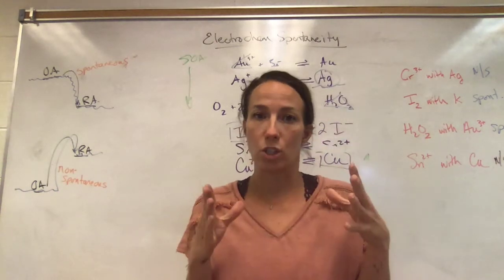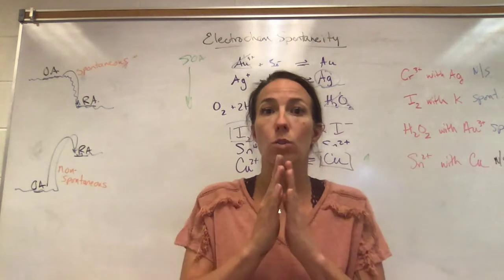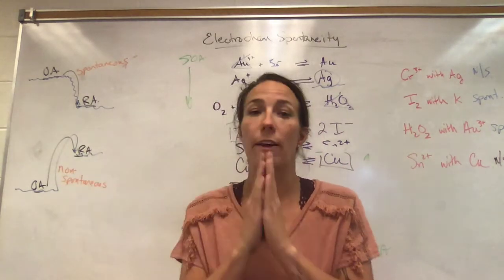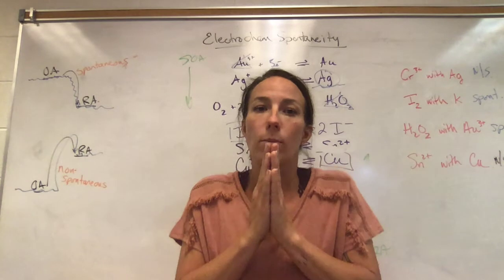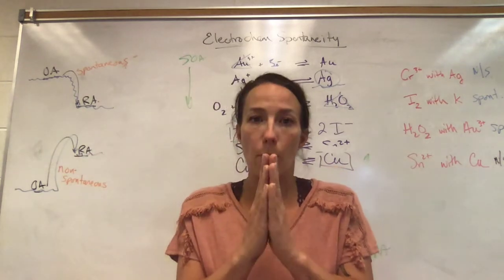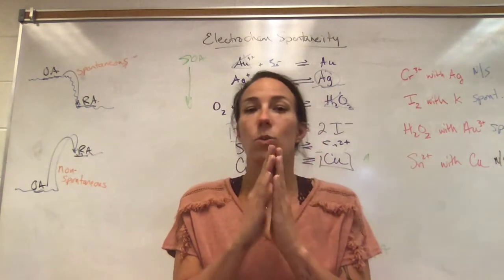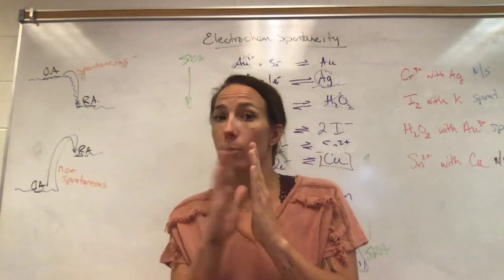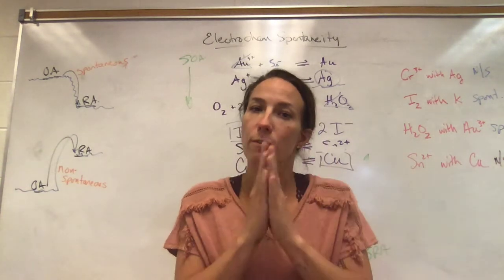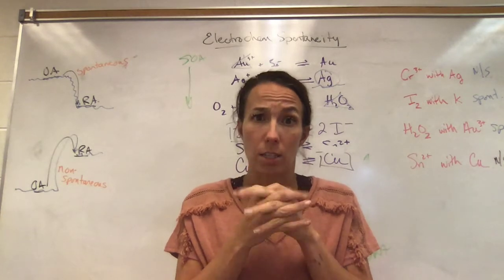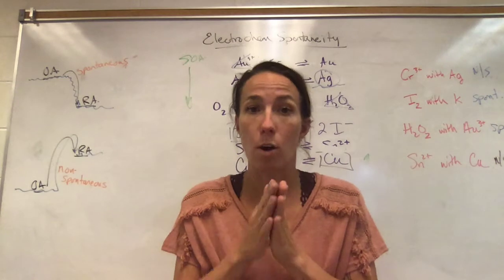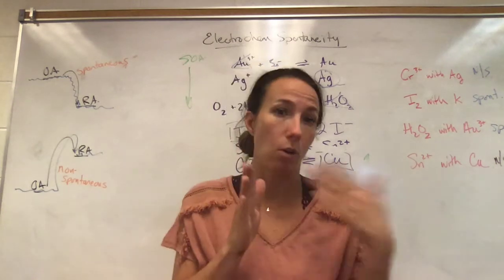Pay attention to ones that can exist on both sides of that table. Transition metals with more than one charge, like Fe²⁺, could go to Fe³⁺ or become iron solid, so you'll find that on both sides. Cu⁺ could become Cu²⁺ or become copper solid — it can lose an electron to become Cu²⁺ or gain an electron to become copper. Water is also on both sides of the table because water can be either reduced or oxidized.